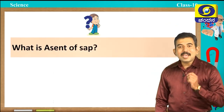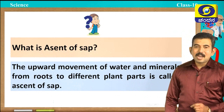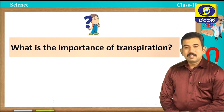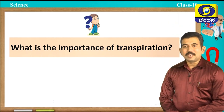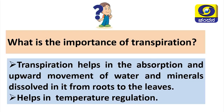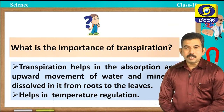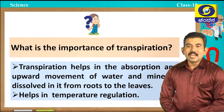What do you mean by ascent of sap? Upward movement of water and minerals from roots to different parts is called ascent of sap. What is the importance of transpiration? Transpiration helps in the absorption and upward movement of water and minerals dissolved in it, from roots to the leaves. It also helps in temperature regulation and plays a very important role in exchange of gases.